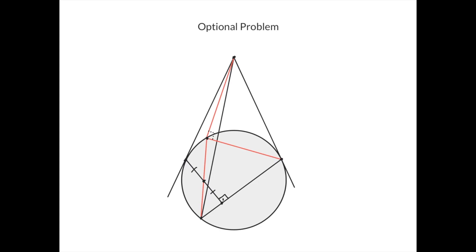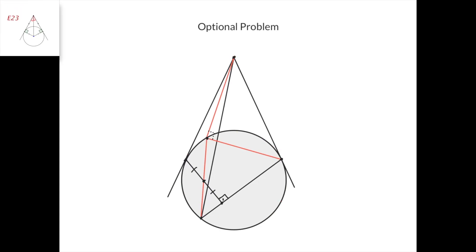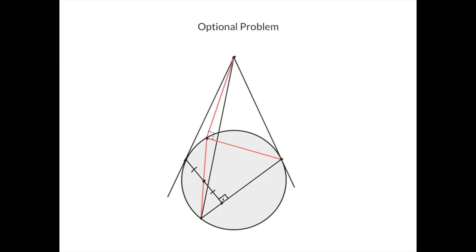Here's the optional problem. Take a circle and a point outside of the circle. Drop the two tangent lines from this point to this circle and let these be the points of tangency. Draw a line that passes through this point and intersects this circle. Now, connect these two points and drop a perpendicular from this point to this line.